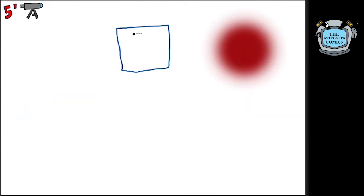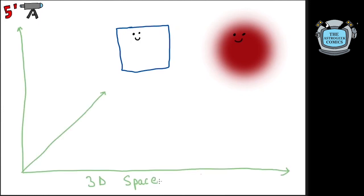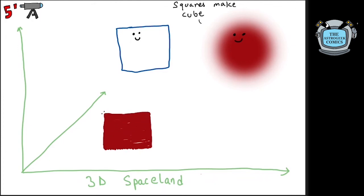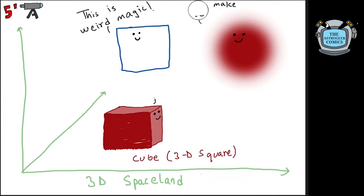The sphere took the square to Spaceland where he explained how the beings of this world look. He explains that 1D lines stacked together make a square. Similarly, 2D squares stacked atop each other make a 3D object, a cube. He introduced the square to a cube, but the square still denied the existence of all of this and called it magic.